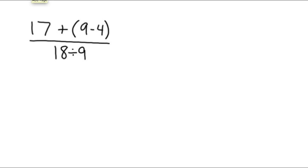Now again, what we have to do is perform all of the operations in the numerator on the top, and then perform all of the operations in the denominator on the bottom. The last thing we do is the division — the numerator divided by the denominator. So in the numerator, we're going to follow the correct order of operations. We start with parentheses. We see parentheses right here: 9 minus 4.